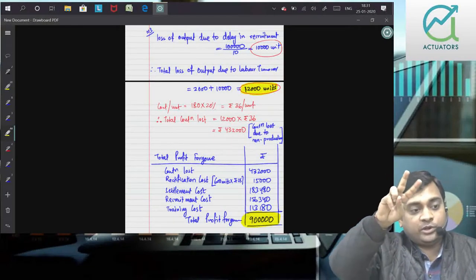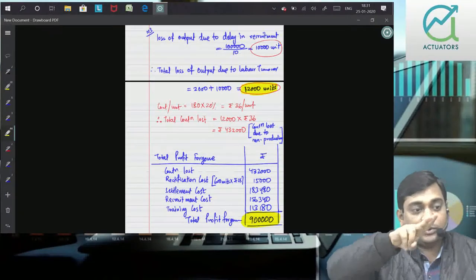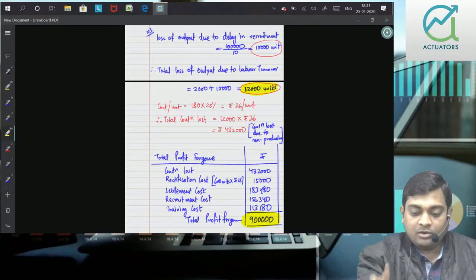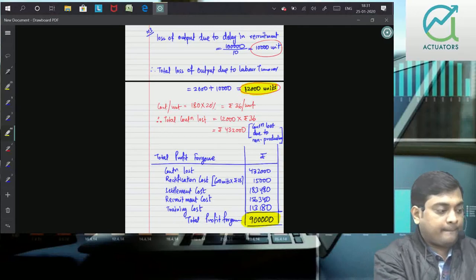2,000 was due to training, 10,000 was due to delay, so due to labor turnover is 12,000.